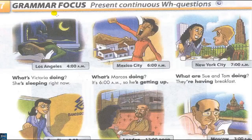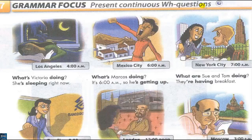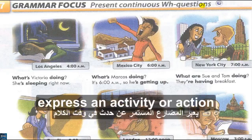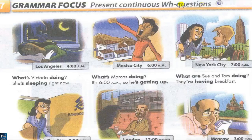Unit 5, Interchange, Part 2, Exercise 7, Grammar Focus: Present Continuous, WH Questions. In the present continuous: am/is/are + verb plus -ing. Negative: am/is/are + not + verb plus -ing. We use the present continuous to express an activity or action which is happening now. Let's start. Look at the pictures. Listen and repeat: What time is it? What's he doing? What's she doing? What are they doing?